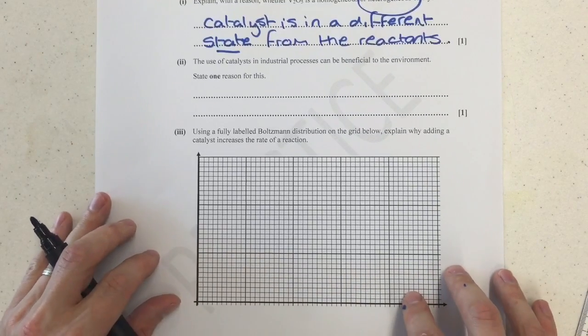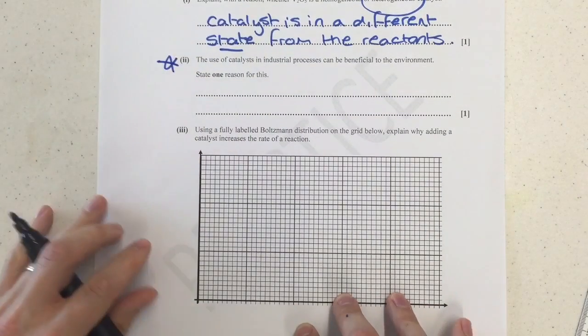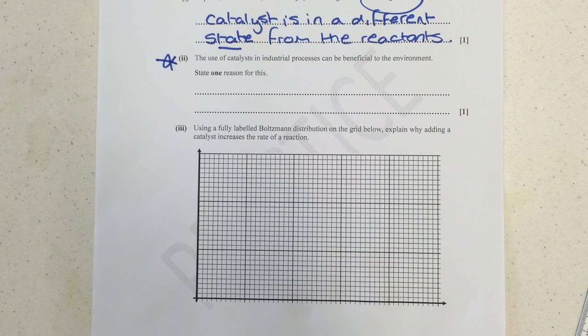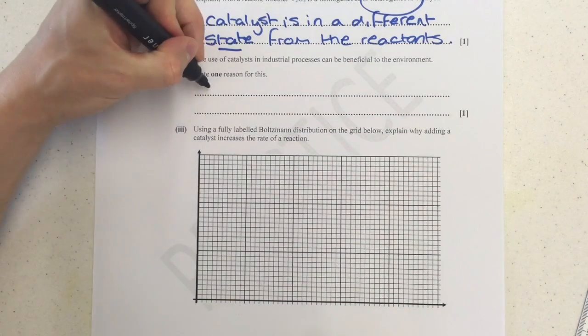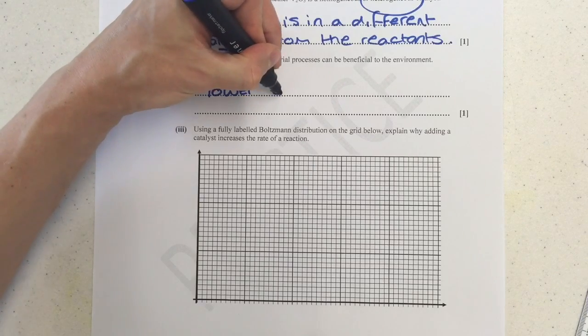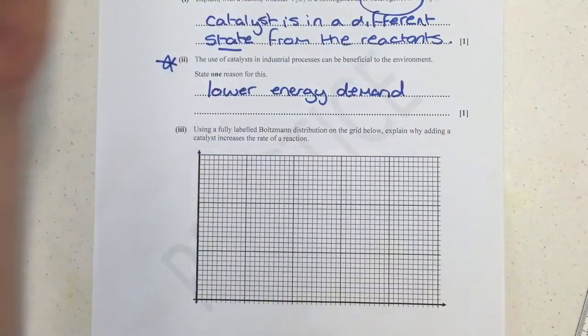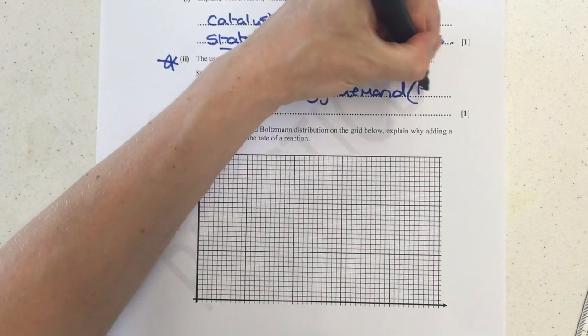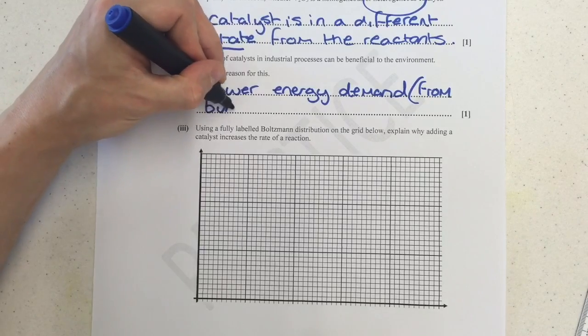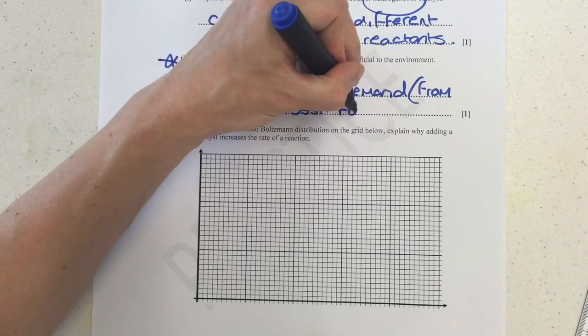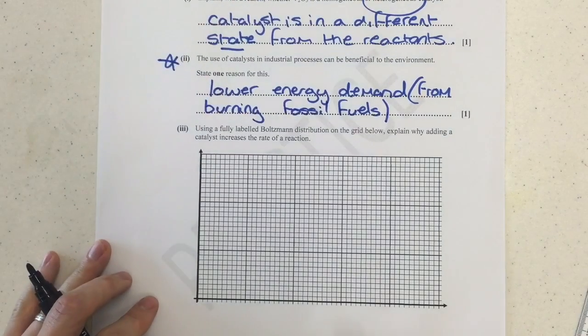Next bit. This is something that's been added into the specification. It used to be in the resources booklet on the old spec, but now they've added it as this final line inside rates as a topic. So we do expect this to come up. The question is, the use of catalysts in industrial processes can be beneficial to the environment, state one reason for this. You can sum this up by saying lower energy demand from burning fossil fuels.